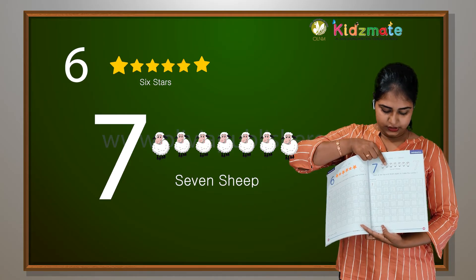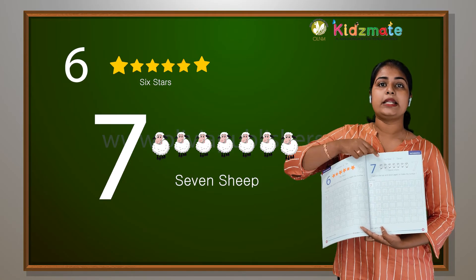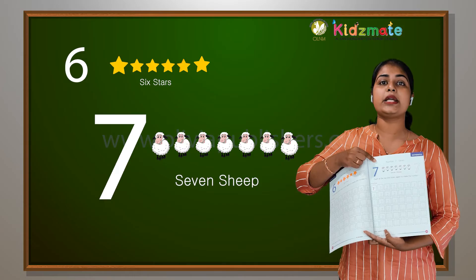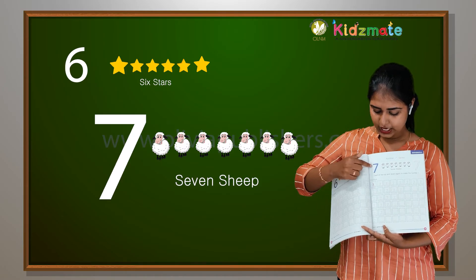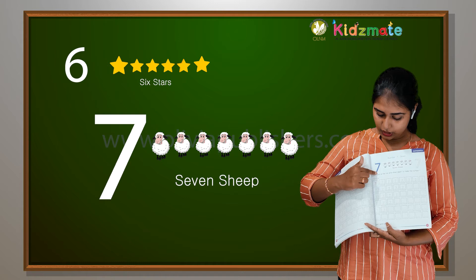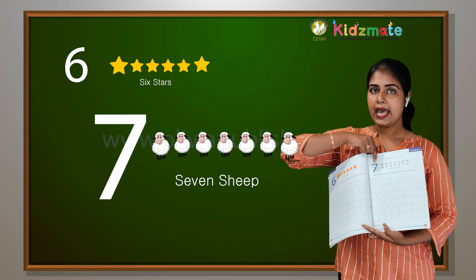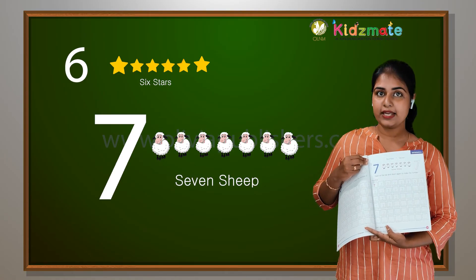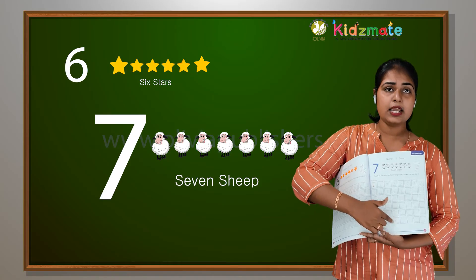One, two, three, four, five, six, seven. We learned the number seven and we counted seven sheep. Now how do you write seven? Dash at the top and down again. Dash at the top and down again to make the number seven. Will you all practice it now?